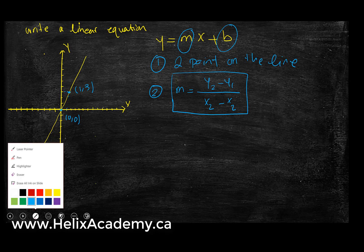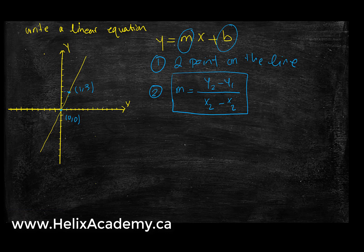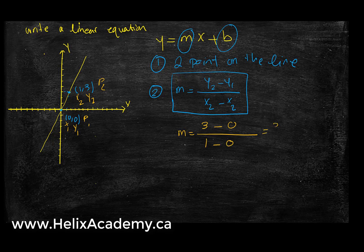So my point 1 is (0, 0) and my point 2 is (1, 3). Therefore x1 is 0, y1 is 0, x2 is 1, and y2 is 3. I plug everything in: y2 minus y1 is 3 minus 0, and x2 minus x1 is 1 minus 0. I end up with 3 over 1, which equals 3. So my slope is equal to 3.